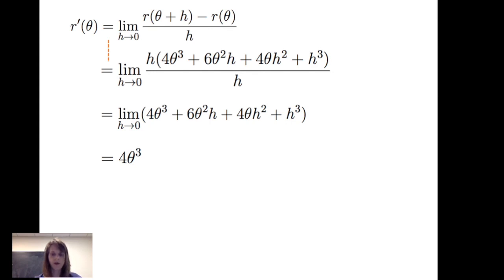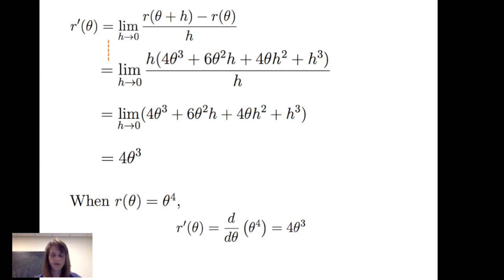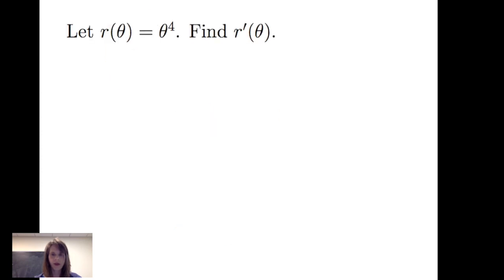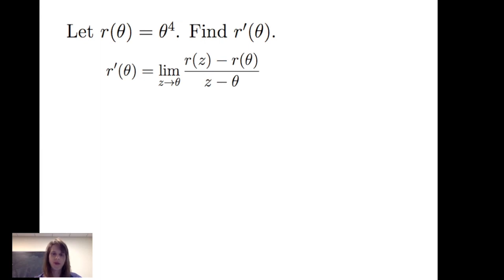We now have the limit as h goes to 0 of 4 theta cubed plus 6 theta squared times h plus 4 theta h squared plus h cubed. As h goes to 0, each of the last three terms goes to 0, and we're left with 4 times theta cubed. So the derivative of theta to the fourth is 4 times theta cubed. We can also calculate this using the other form of the limit definition: the limit as z goes to theta of r evaluated at z minus r evaluated at theta divided by z minus theta.